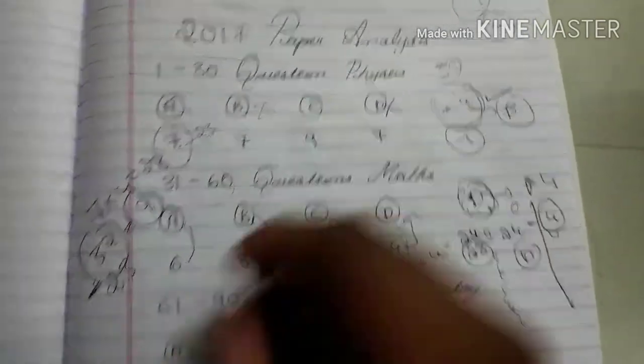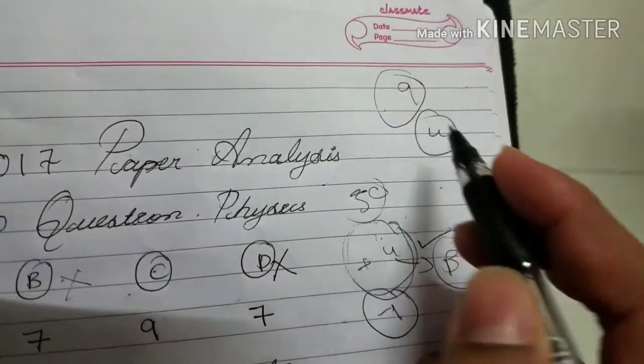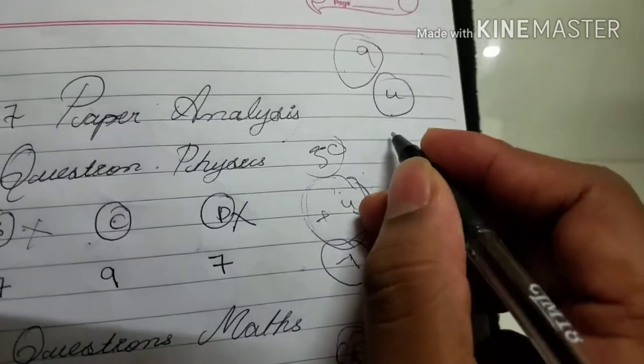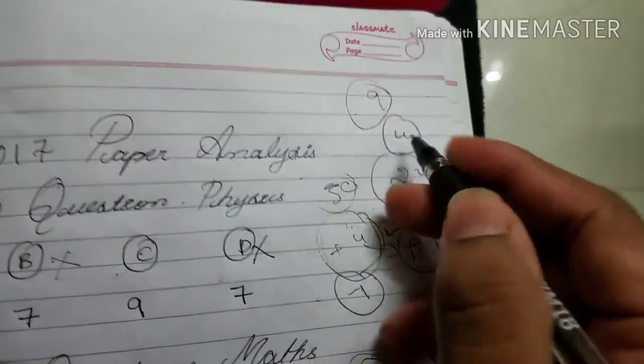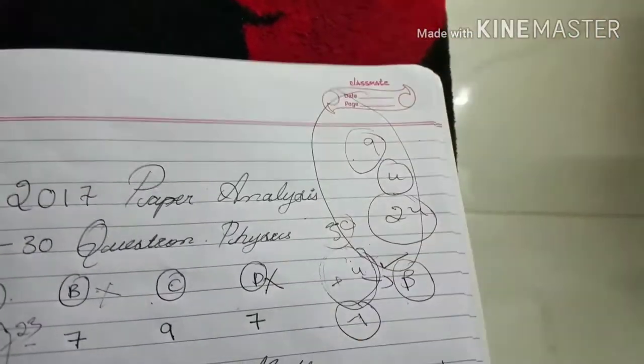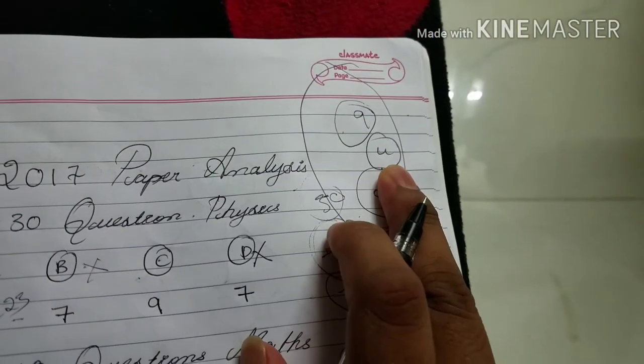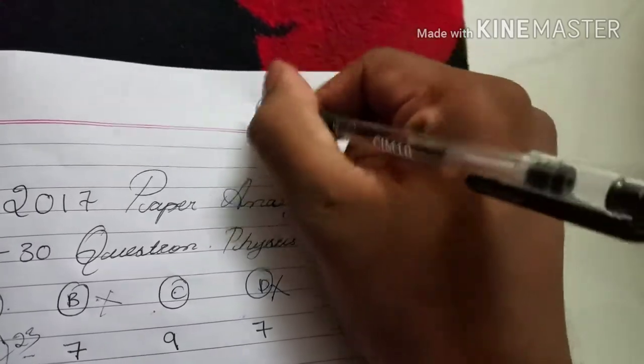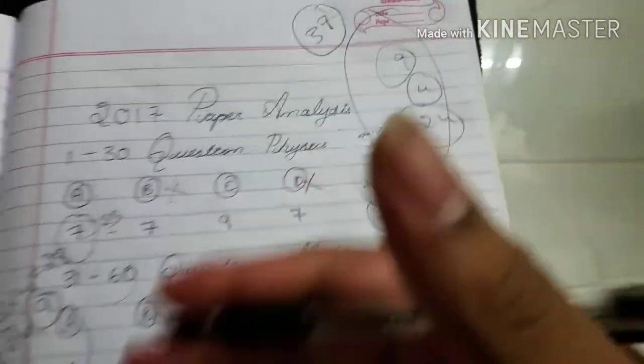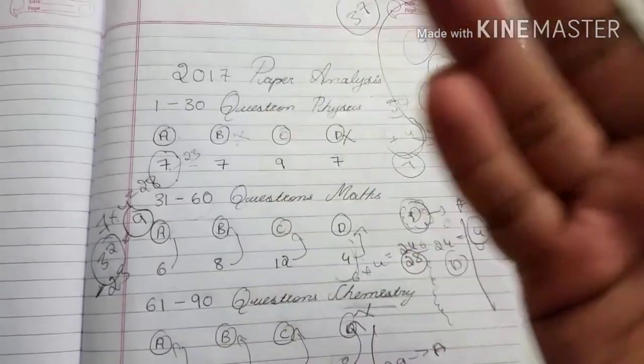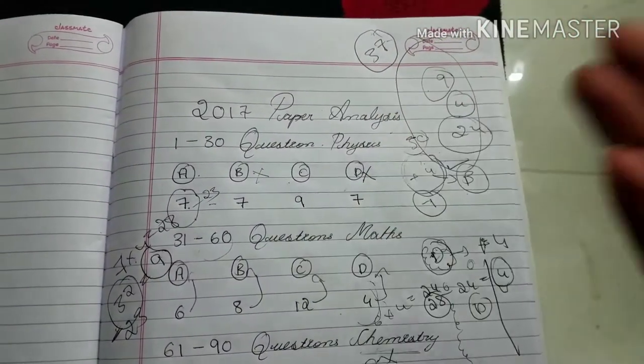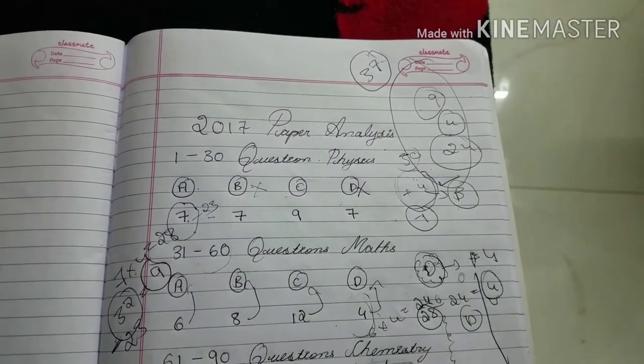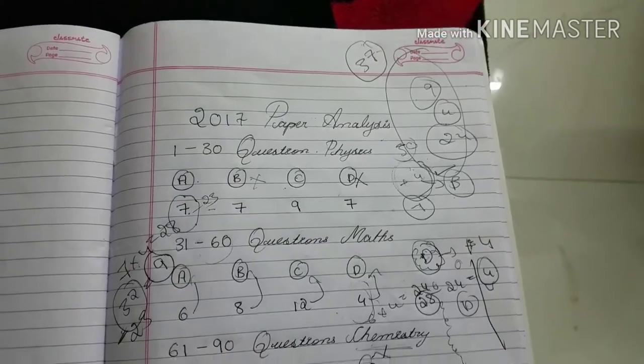So our total marks are 9, 4, and 24. Now add this: 24 plus 4 equals 28, 28 plus 9 equals 37. See, you got 37 marks based on this 2017 paper analysis. So guys, you can get easily 30 marks minimum, so don't need to worry about negative marks.